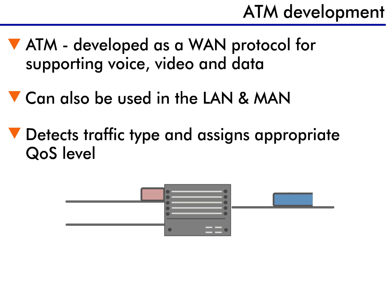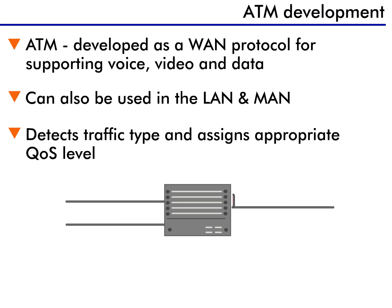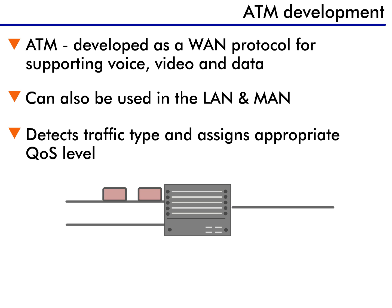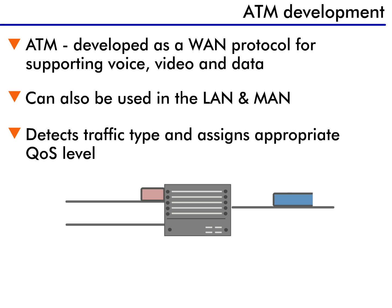Before we look at how ATM works, let's discuss how the protocol developed. ATM was developed by the WAN telecommunications industry as a new and improved way to support different types of traffic, such as voice, video, and data, across the WAN. It was only during the development of ATM that it was seen as a protocol that could be used for all networks, not just the WAN, but the LAN and MAN as well.